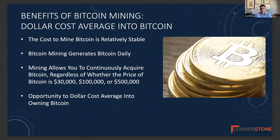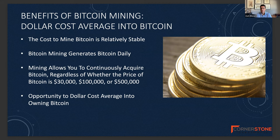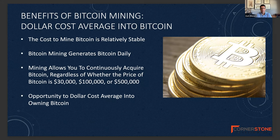You're also dollar cost averaging into Bitcoin, which is a good way to acquire an asset that can be volatile. Bitcoin mining is very stable — we know what the costs are. The two main monthly expenses are the cost of electricity, which we're locking in on a long-term power purchase agreement, and the hosting costs. Those two costs are relatively stable, so acquiring Bitcoin through mining gives you the ability to dollar cost average in. You're generating Bitcoin every day and receiving distributions every month, regardless of whether the price is $24,000, $30,000, $100,000, or $500,000.